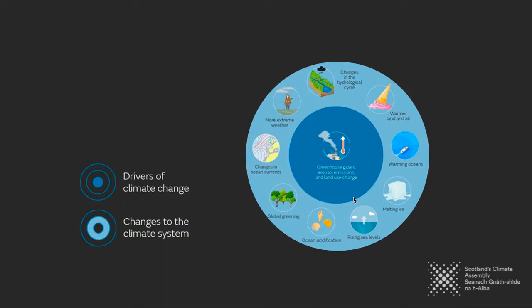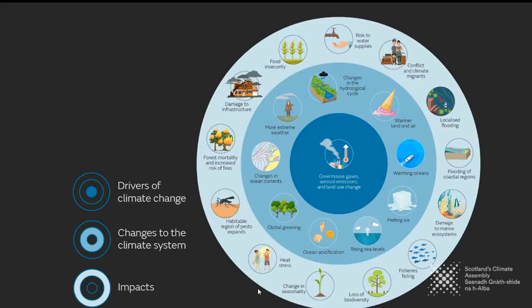Changes in our natural environment such as warming oceans, rising sea levels, and more extreme hazard events lead to consequences including damage to infrastructure and people's homes, more pests and diseases and movements of these things, impacts on our health, but also on the natural environment. We also see flooding of coastal regions, increased damage to marine ecosystems, and changes in our seasonality for growing crops.